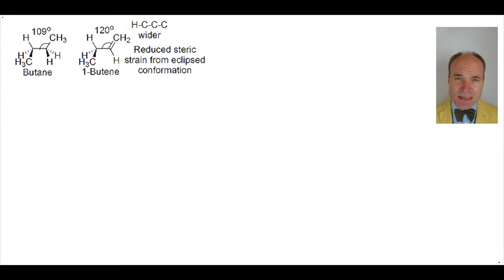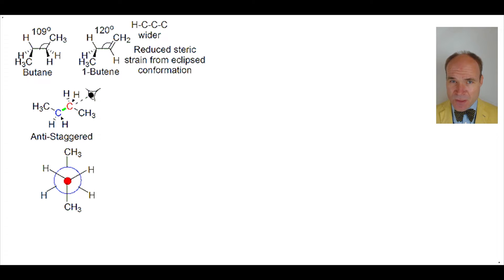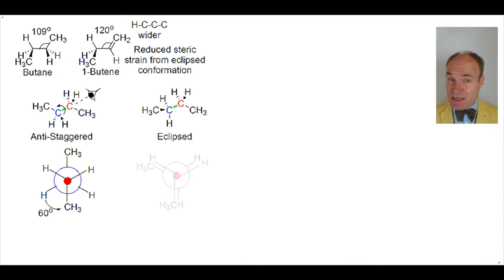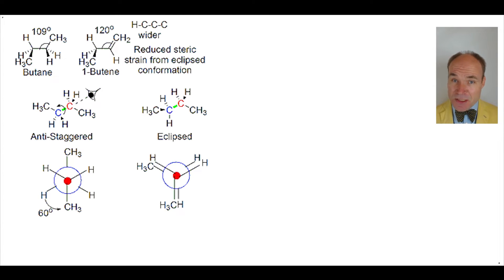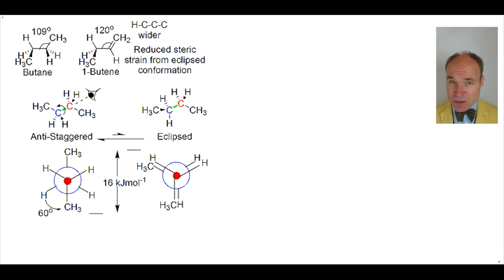Let's consider the anti-staggered conformation viewed down carbon two (red) to carbon three (blue) in Newman projection. Upon anti-clockwise rotation about the 2,3 carbon-carbon bond by 60 degrees, the eclipsed conformation is generated. With butane, the largest population of the two conformations is the anti-staggered conformation, due to it being 16 kilojoules per mole lower in energy than the eclipsed conformation.